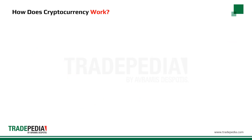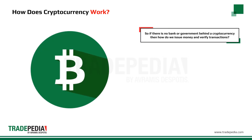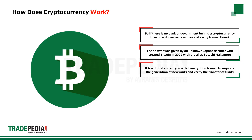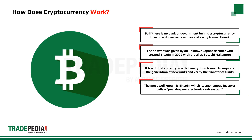How does cryptocurrency work? If there is no bank or government behind a cryptocurrency, then how do we issue money and verify transactions? The answer was given by an unknown Japanese coder who created Bitcoin in 2009 with the alias Satoshi Nakamoto. A cryptocurrency is a digital currency in which encryption is used to regulate the generation of new units of the cryptocurrency and verify the transfer of funds. The most well-known is Bitcoin.